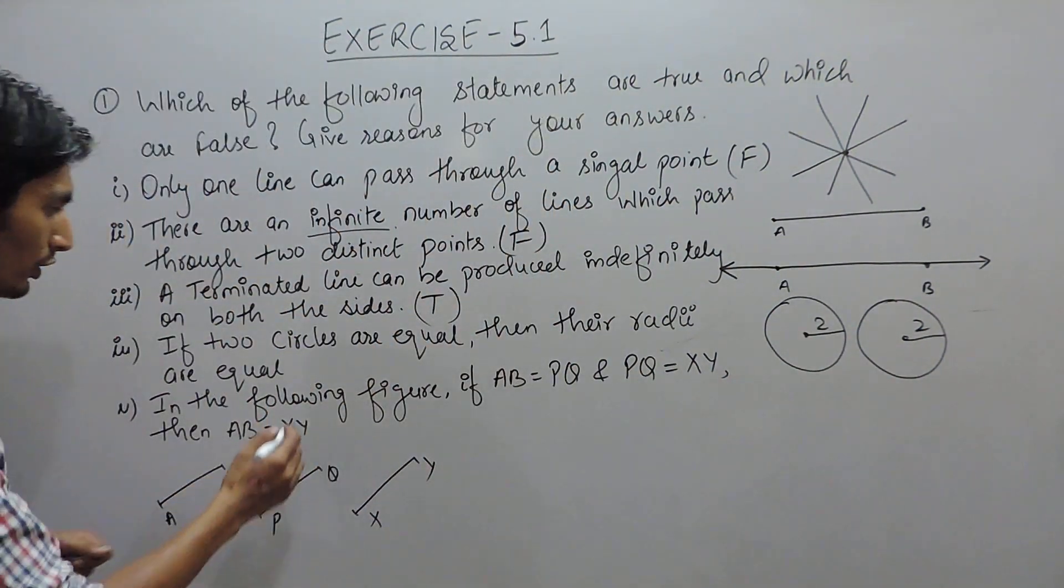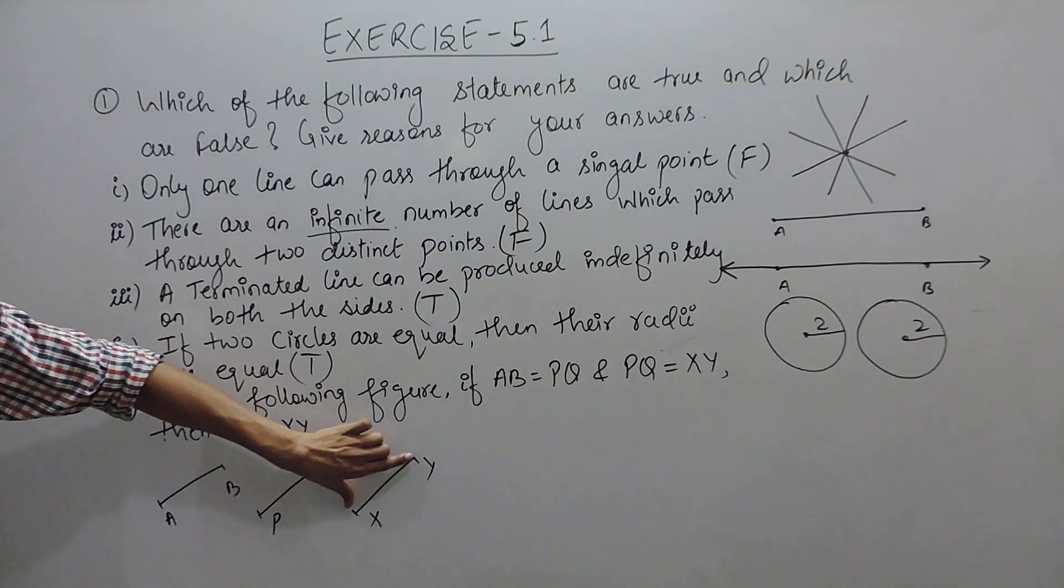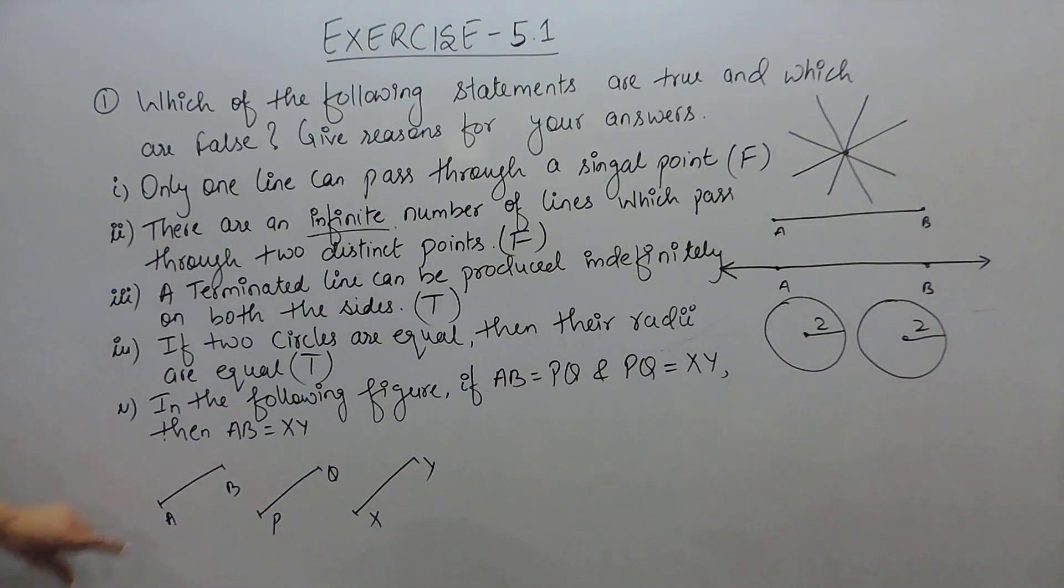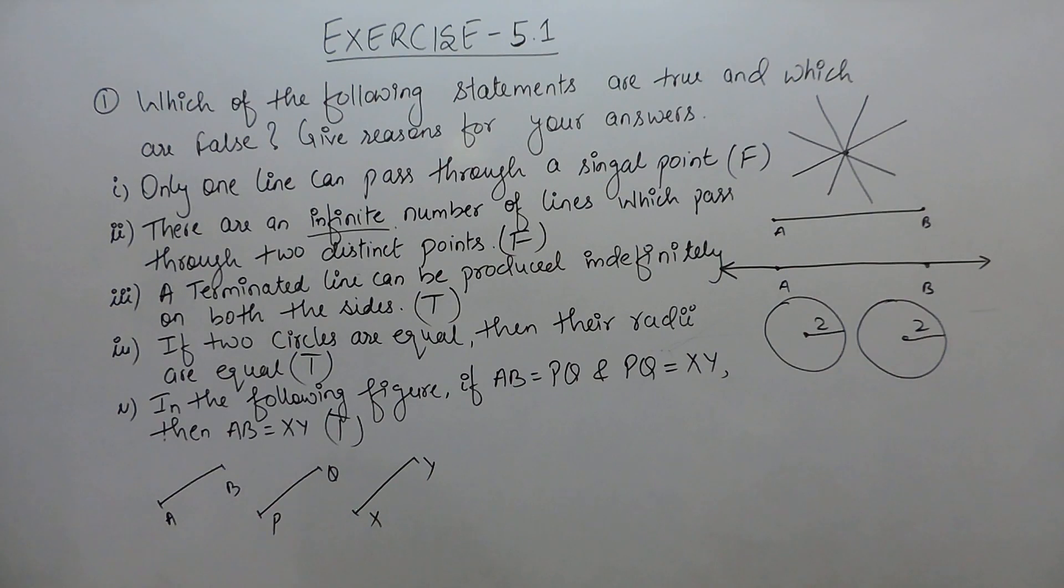In the last statement in the following figure, if AB equals PQ, meaning if this line is equal to this line and PQ is equal to XY, and this line is equal to this line, then you have to find whether AB is equal to XY. Yes, obviously this is a true statement and this can be understood by considering AB's length is equal to 4 cm because AB is equal to PQ which is given.